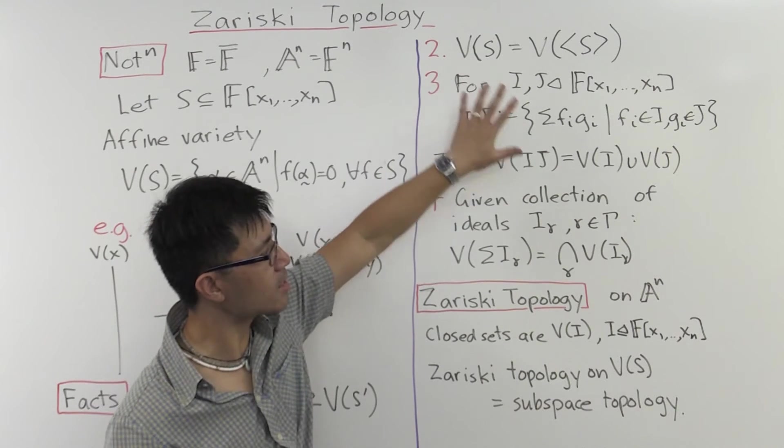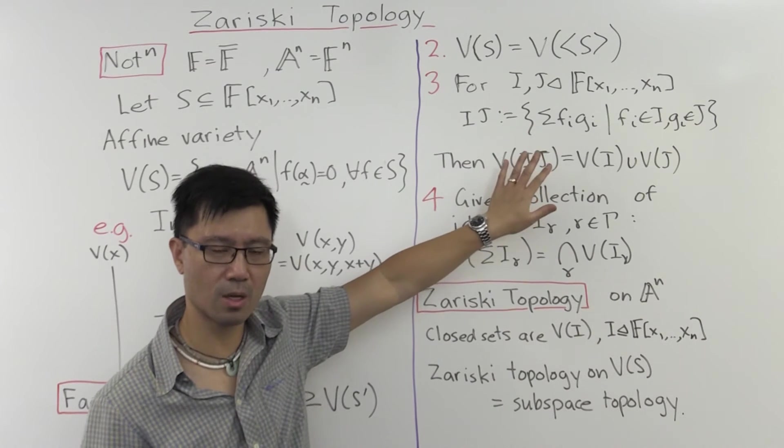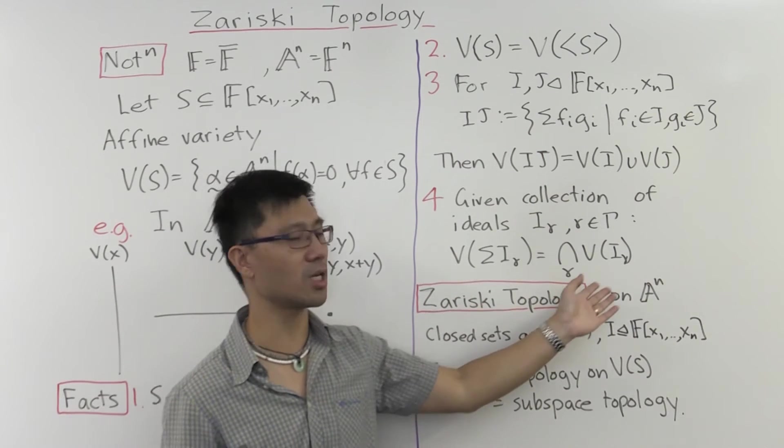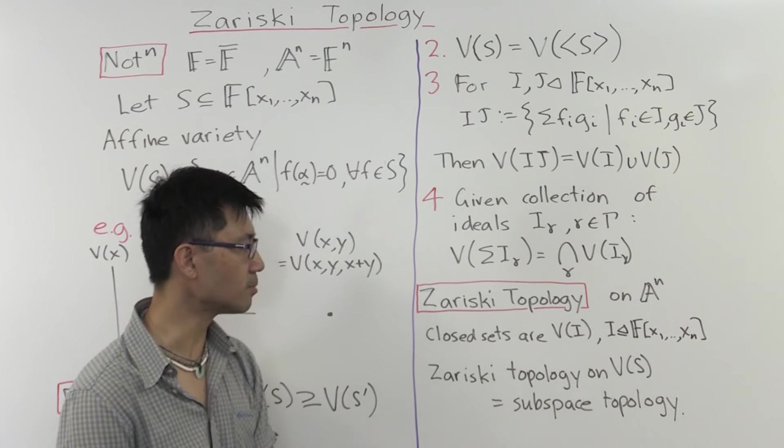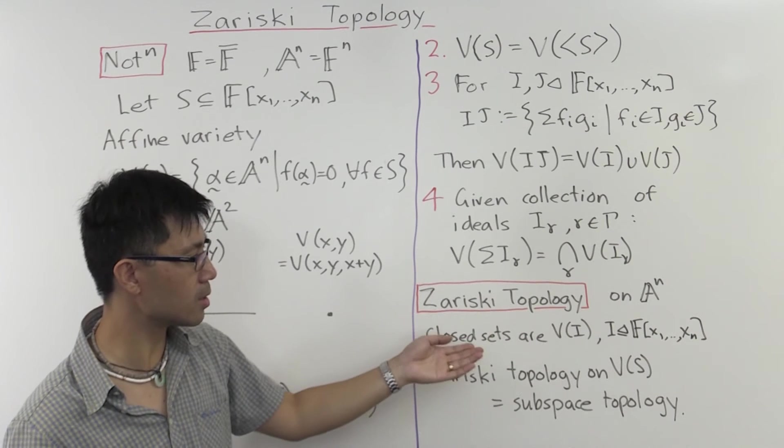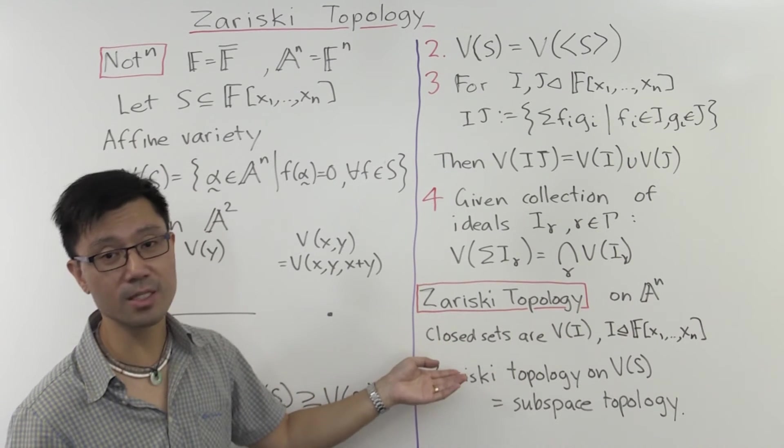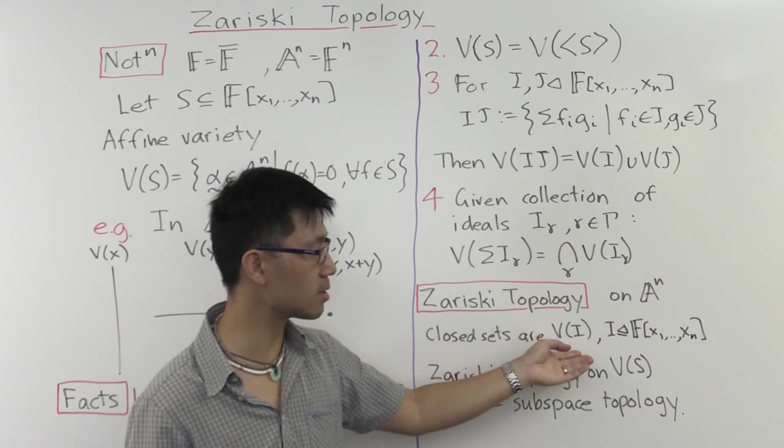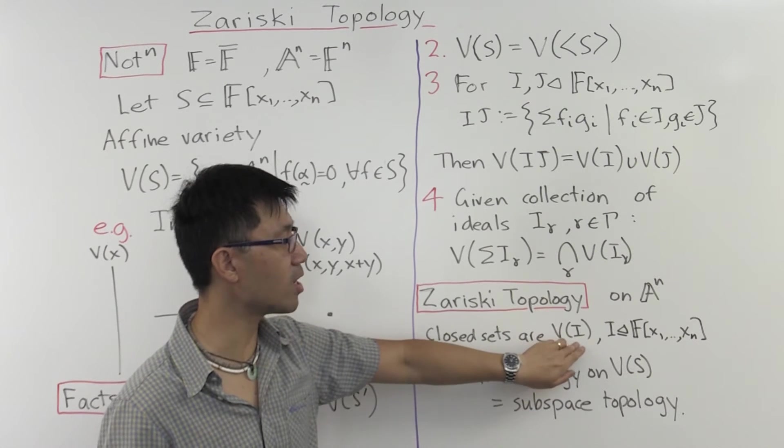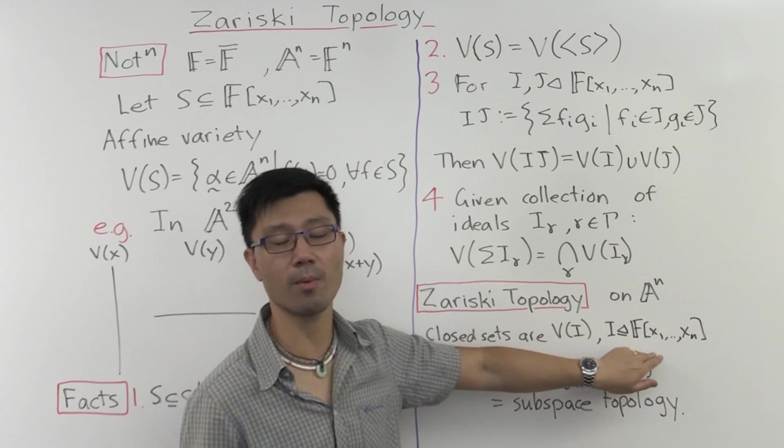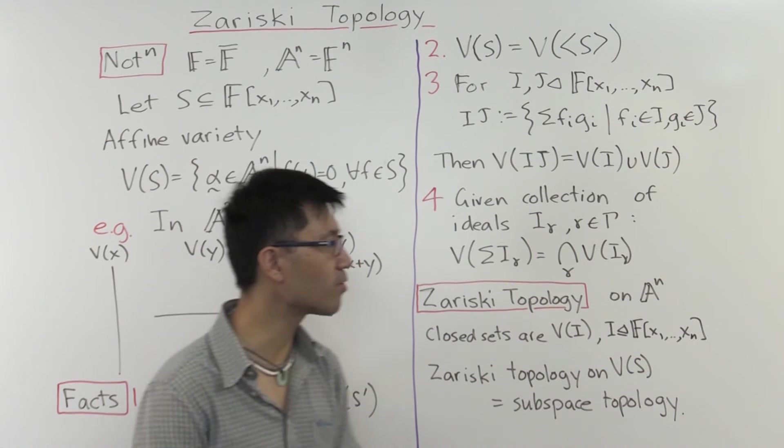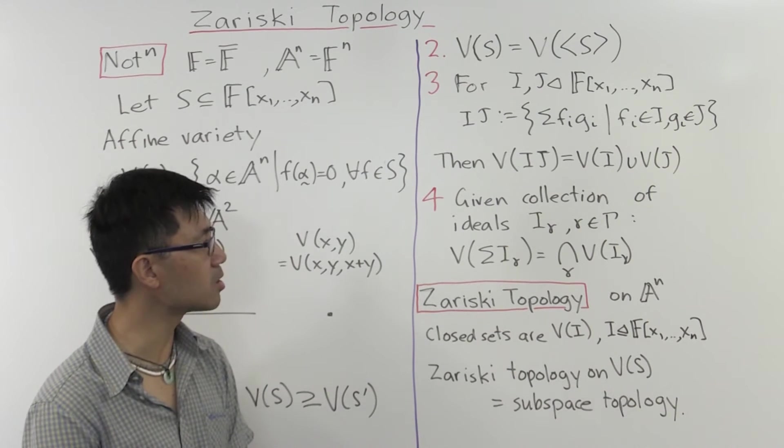Okay, so why did I list these properties here? Well, it turns out this is the way that we'll define the Zariski topology on affine n space. To give you the topology, normally you give the open subsets. But here instead, I'll tell you the closed sets. And the closed sets are just all the varieties, or the V of I, and you might as well just take I to be some ideal in this polynomial ring.